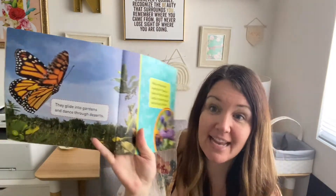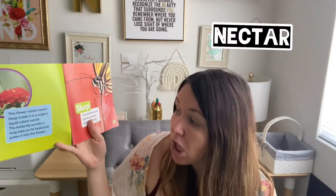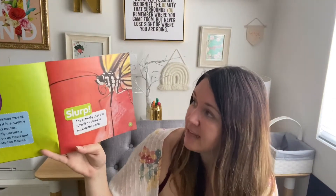They glide into gardens and dance through deserts. What are butterflies looking for? Flowers to feed on. When a butterfly lands, it tastes the flower with the tips of its feet. Their flower tastes sweet. Deep inside, it is a sugary liquid called nectar. The butterfly unrolls a long tube on its head and pokes the flower, using the tube like a straw to suck up the nectar.